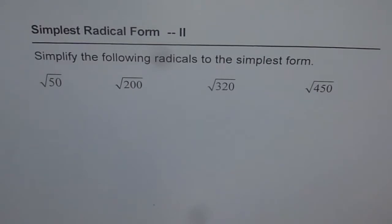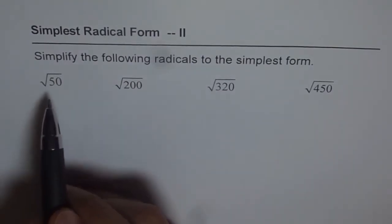The four radicals given on this sheet are square root of 50, square root of 200, square root of 320, and square root of 450. How do you simplify it? The first step is writing the number in factored form. Preferably, if you can write one of the factors as a perfect square, then it's faster to simplify.